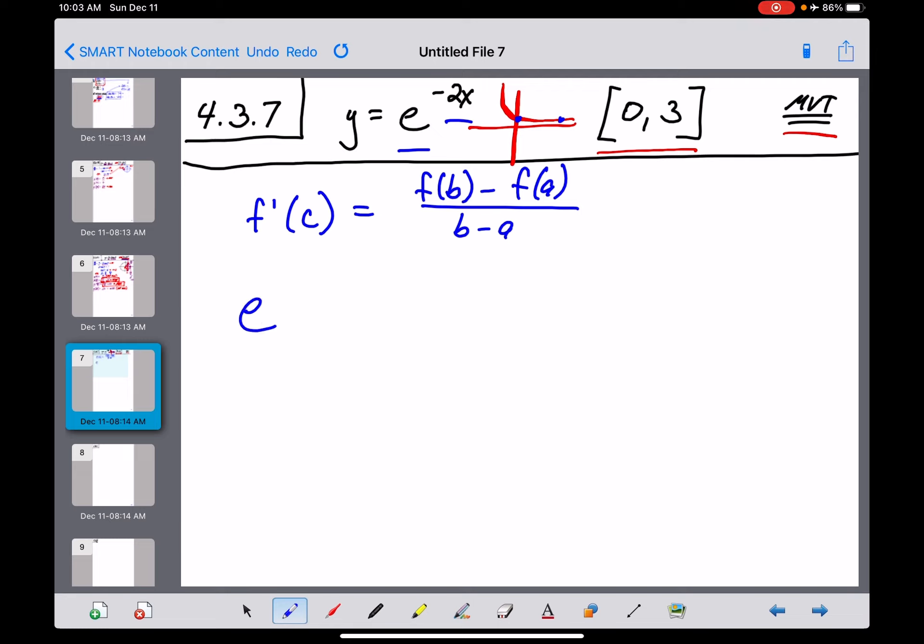So the derivative of an exponential function is the same base, e, to the same power, which would be negative 2x, but since we're supposed to put a c in there, that's now going to become a negative 2c for the power, times the derivative of that exponent, which is a negative 2. So there's your derivative evaluated at this magical point c, and that should equal,